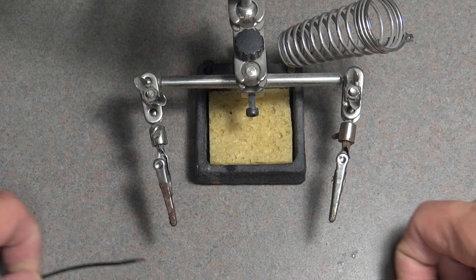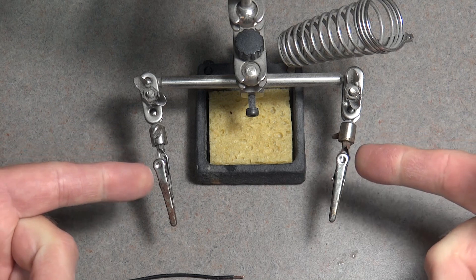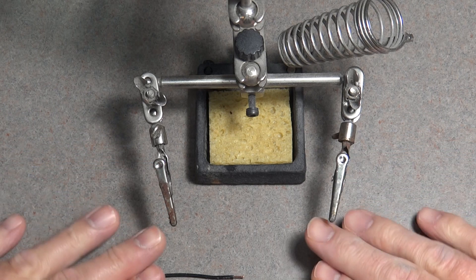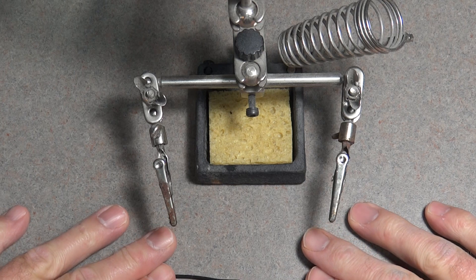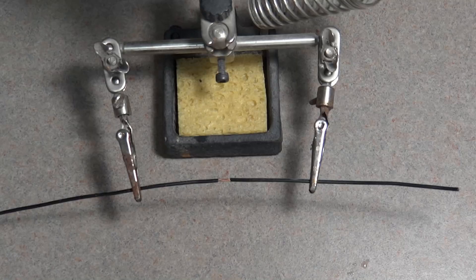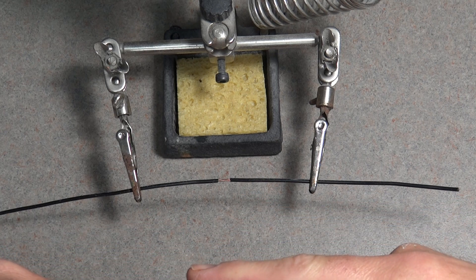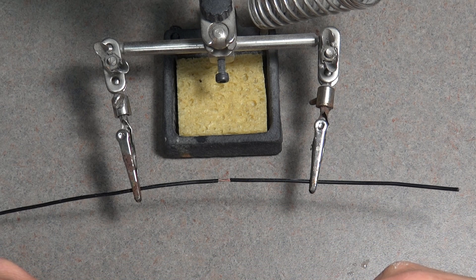When soldering wires together, you may want to use some helping hands. You can sometimes use masking tape to hold things in place for you, just protect the surfaces beneath the wires. Place the two leads together with the bare wires that are going to be soldered, overlapping.